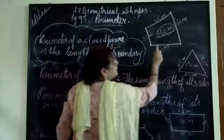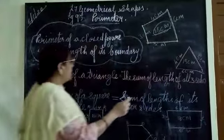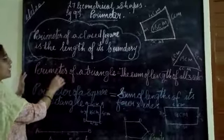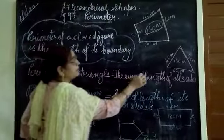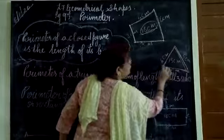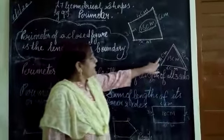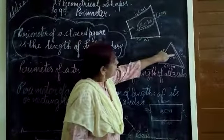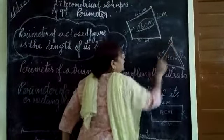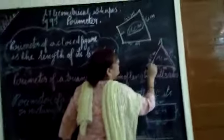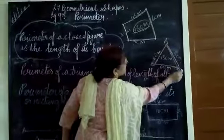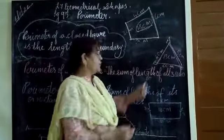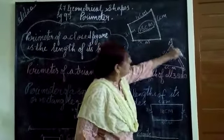Now we will do perimeter of a triangle. Since a triangle, you know, is a three-sided figure, what we are going to do is add the three sides. Suppose the triangle is A, B, C. B and A is 4 centimetres, A and C is 5 centimetres, B and C is 6 centimetres. So for a triangle we will add all three sides.